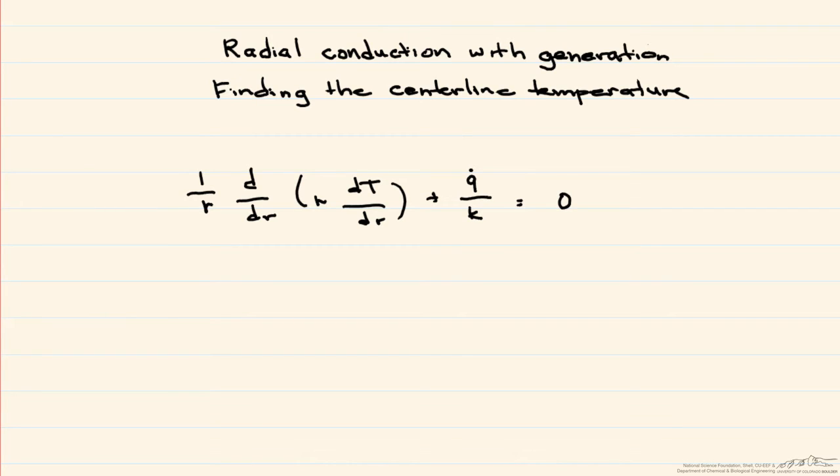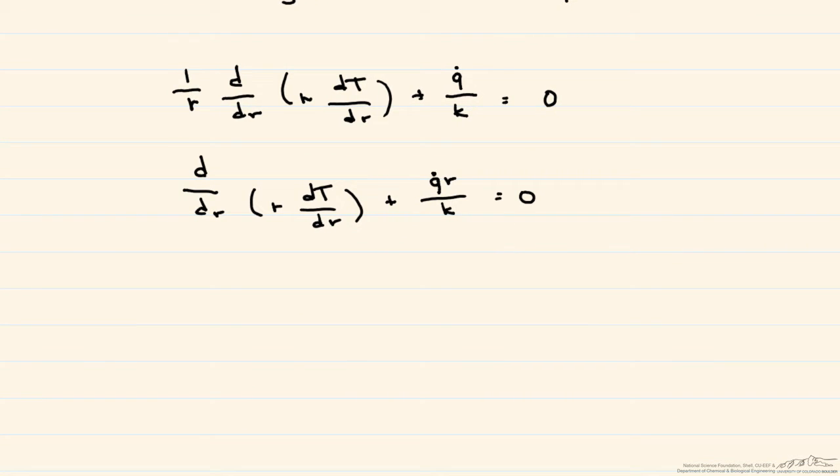So the first thing let's do is just multiply through by r. Let's integrate this once. So this is r dT/dr is equal, and I move things to the other side, minus q dot times r squared divided by 2k plus some constant.